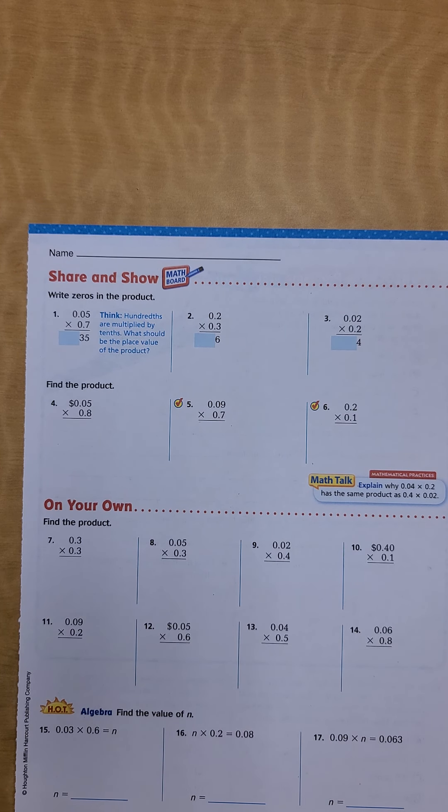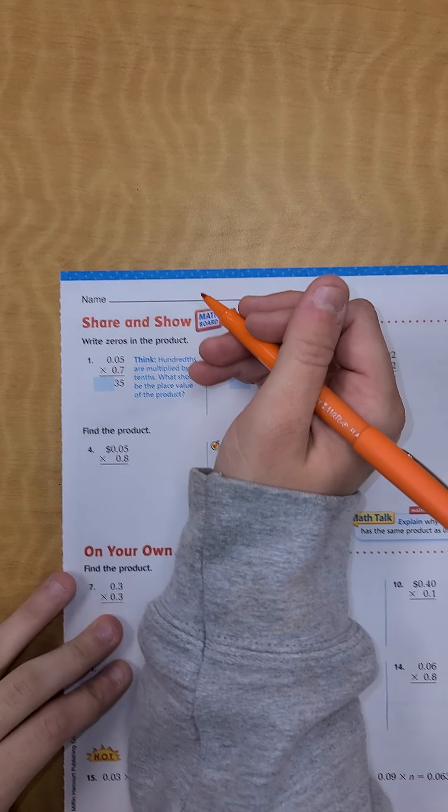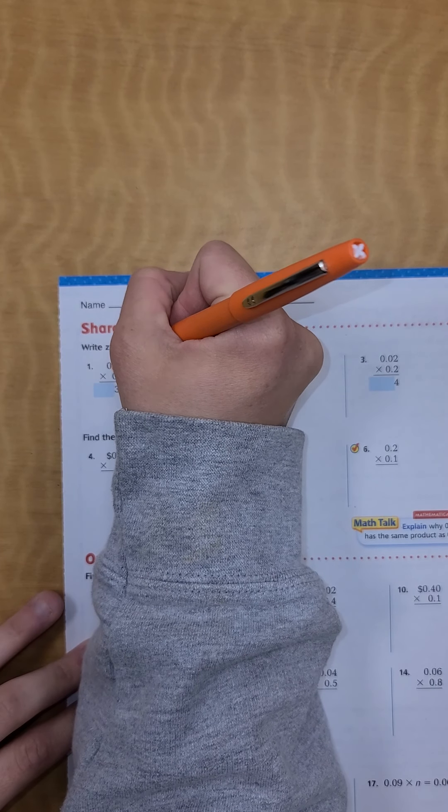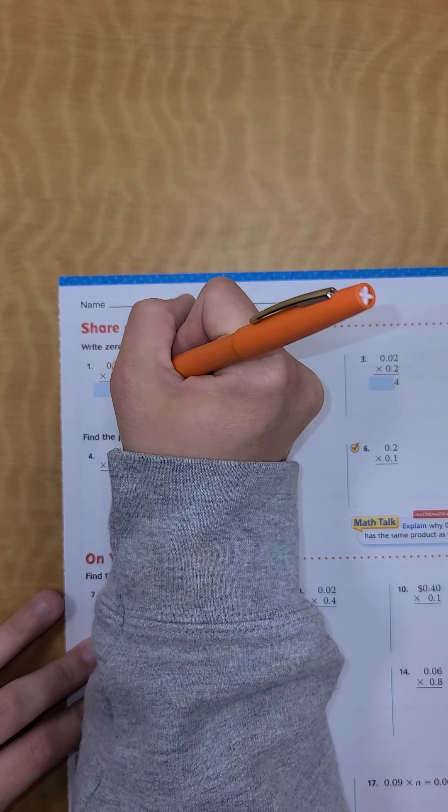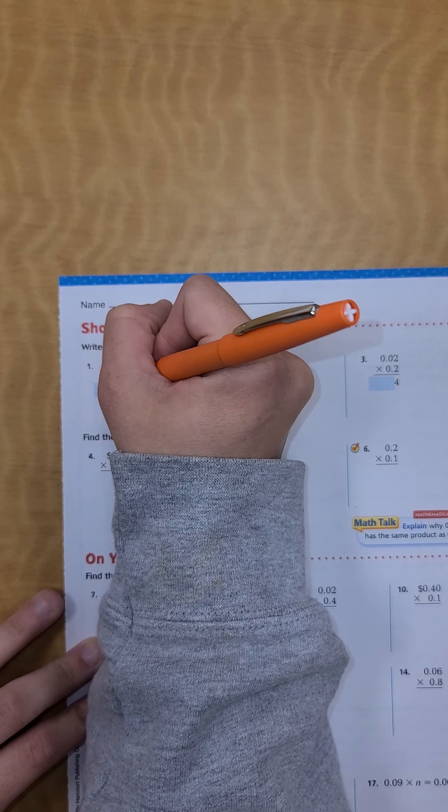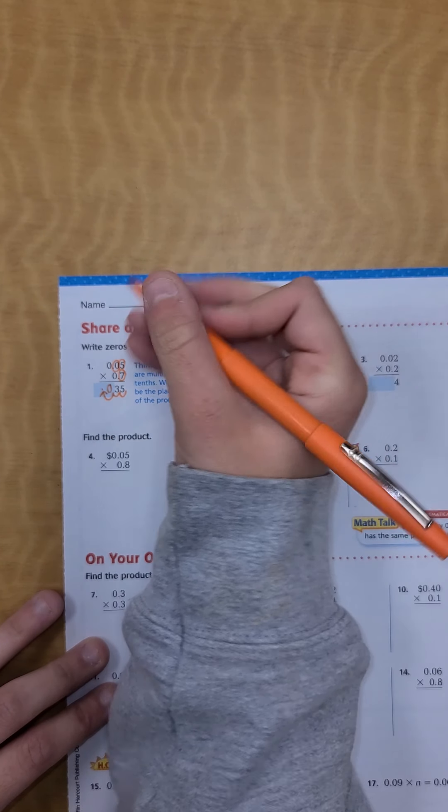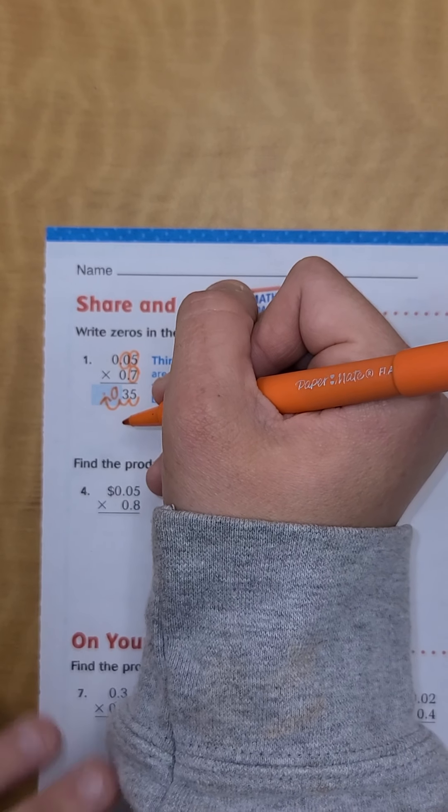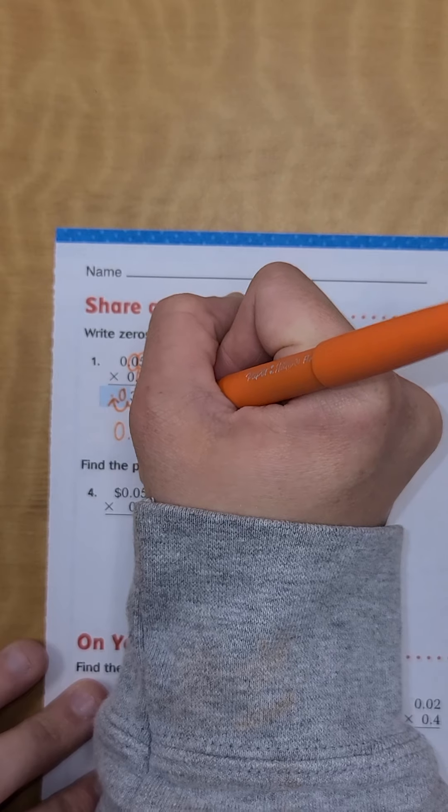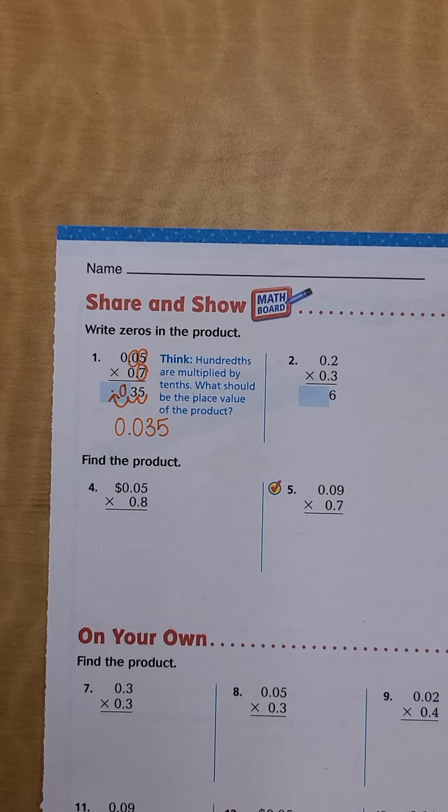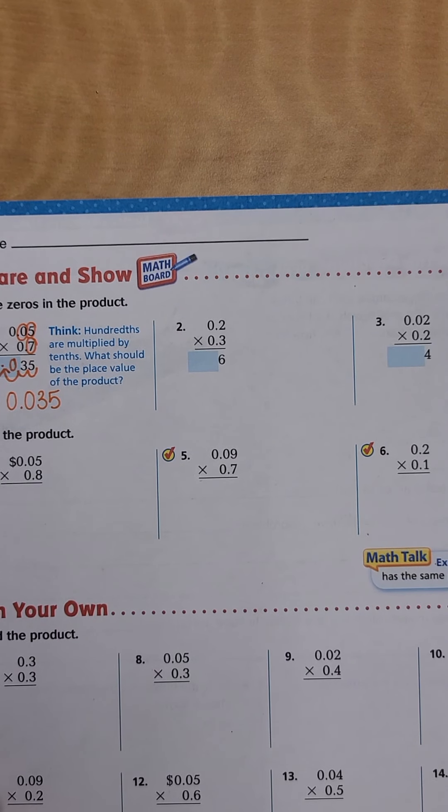So this one, they've already multiplied everything for me. I'm gonna figure out where my decimal is gonna go. One, two, three spots. One, two, three spots. So I go right here. There's a space right here so I'm gonna put my zero right there and I'm gonna rewrite my number. Let me see if I can zoom in just a little bit for you. Rewrite my number as 0.035.